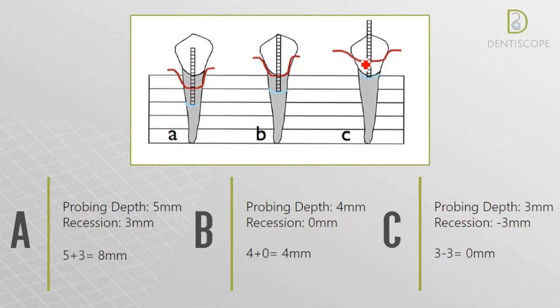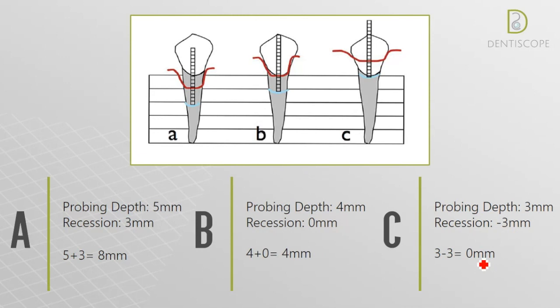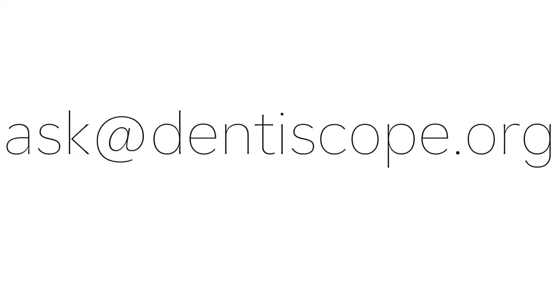In the last scenario, the probing depth is three millimeters, however the gingival margin lies on the anatomical crown. When we measured the recession to the cemento-enamel junction, it was negative three, which is a gingival overgrowth. We subtract these two numbers and get a clinical attachment loss of zero. That's it — hope it was helpful and thank you so much for watching.